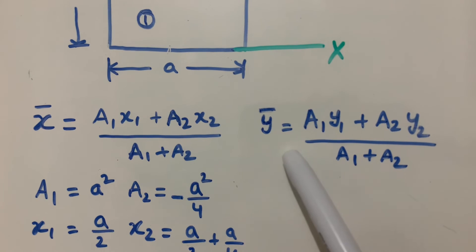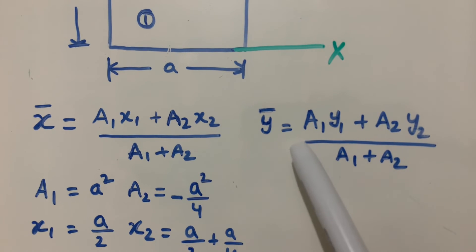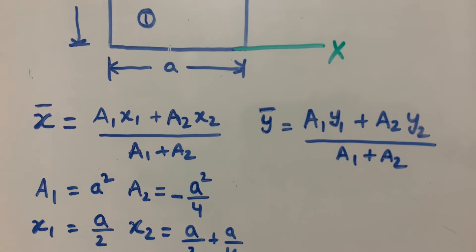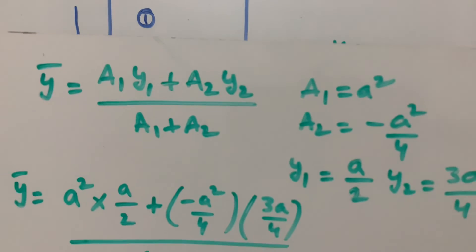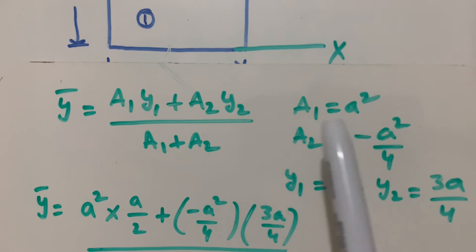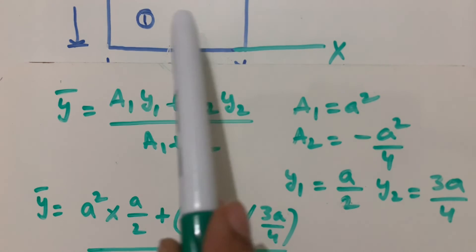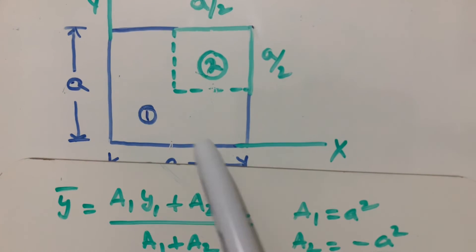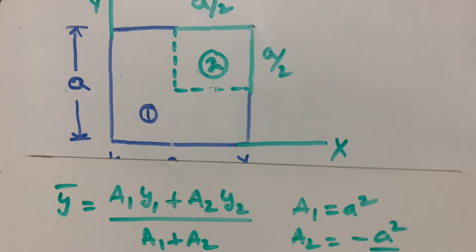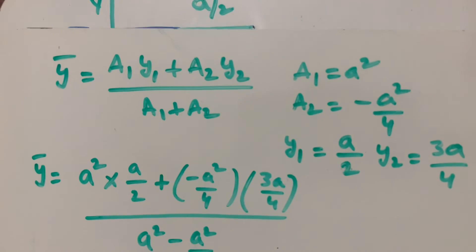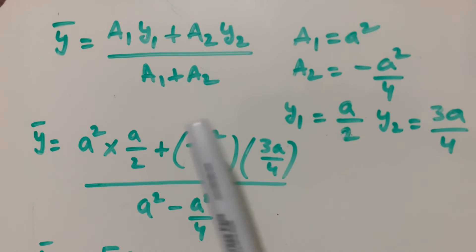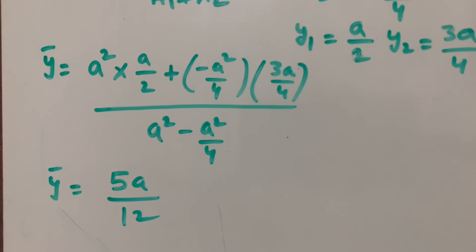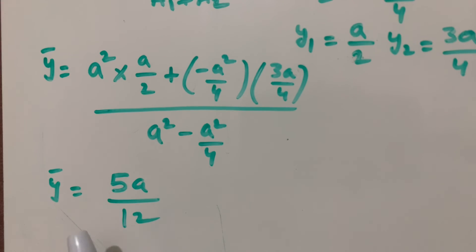Similarly, we find ȳ using the formula ȳ = (A1·y1 + A2·y2) / (A1 + A2). The area values A1 = a² and A2 = −a²/4 are the same. Substituting all values and calculating gives the same result: ȳ = 5a/12.